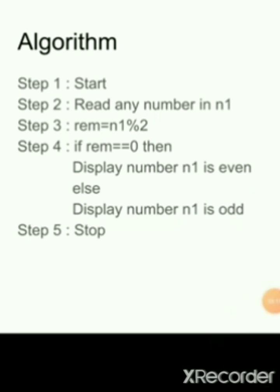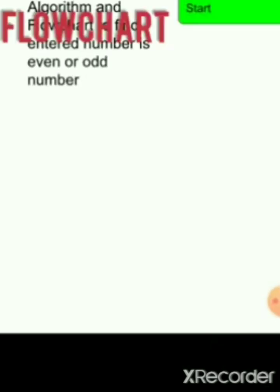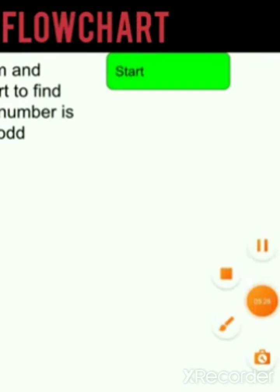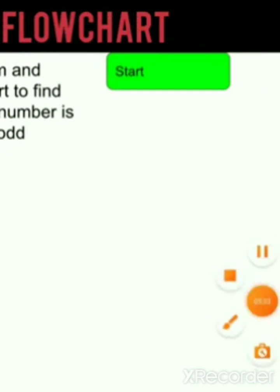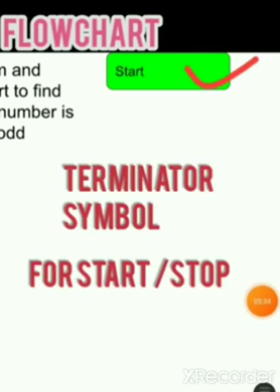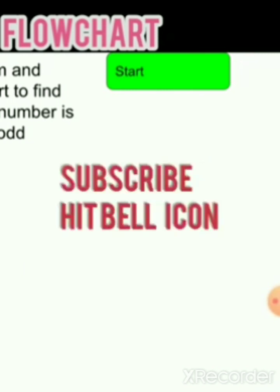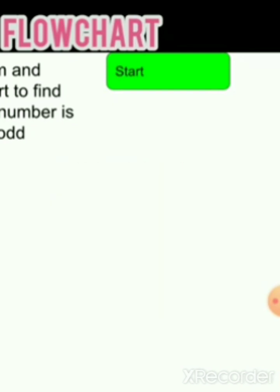Now this is the flowchart. The very first symbol is called the terminator symbol, which is used for start and stop. You can write 'Begin' also here. This oval/rounded shape is the terminator symbol for start and stop.